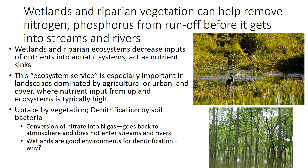Why do wetlands and riparian vegetation help so much in removing nitrogen? There are two reasons. First, these systems are often highly productive, meaning there is a lot of vegetation growing quickly and they have high nutrient demand. They can take up a lot of nitrogen in nitrate form and convert it into organic material. Second, wetlands are critical as nitrogen sinks because they can do a lot of denitrification by the soil bacteria that live there, converting excess nitrate into nitrogen gas and returning it to the atmosphere so it does not enter streams and rivers.